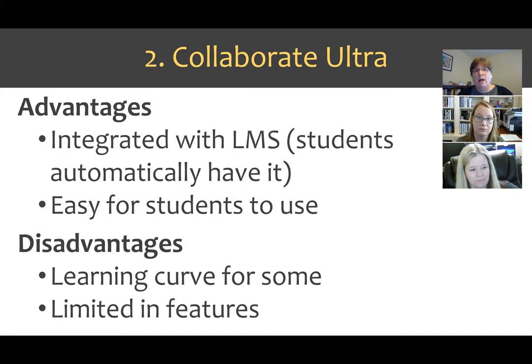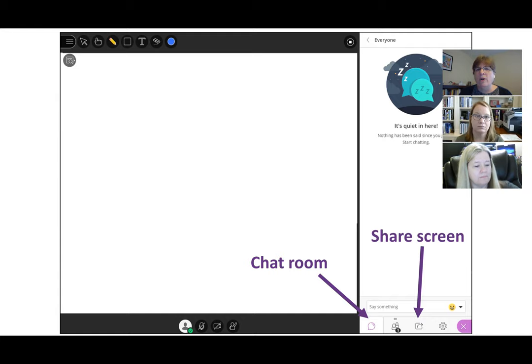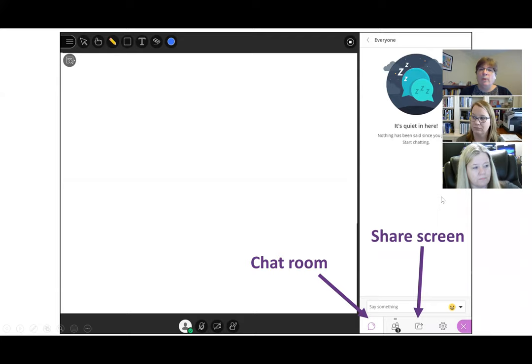Collaborate Ultra is really a workhorse. If you're interested in how to use it, there's a video available on the blog and on LinkedIn about how to set it up. In terms of what it looks like, the white space is where you can use the whiteboard or share your screen. I typically share PowerPoint or Excel with students, and the student can share their screen if you give them permission. You also have a chat room and a participant list — it's really that simple.